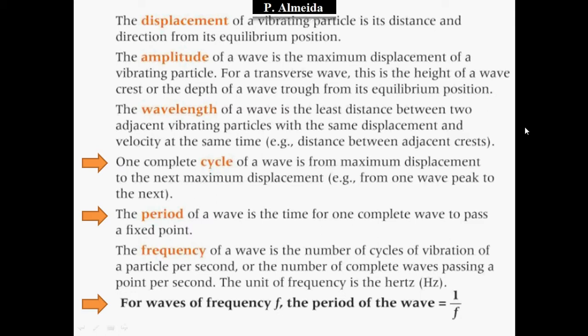Amplitude comes in meters. For a transverse wave, it's the height of the crest or the depth of the trough from the equilibrium position. Wavelength, also in meters, is the least distance between two adjacent vibrating particles with the same displacement and velocity at the same time — for example, the distance between two peaks or two troughs. One complete cycle of a wave goes from maximum displacement to the next maximum displacement, which is the same as one full wavelength.